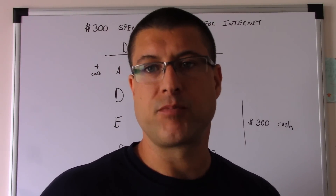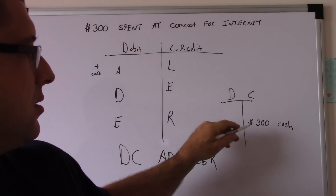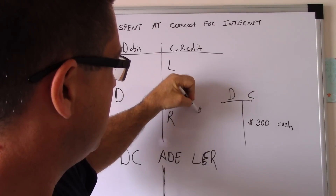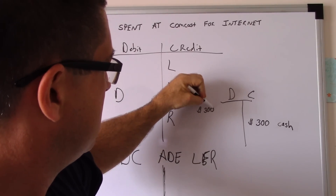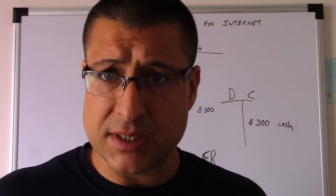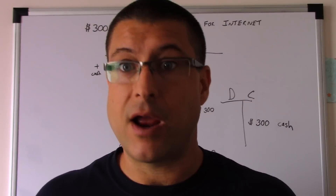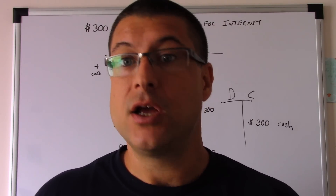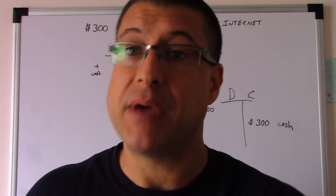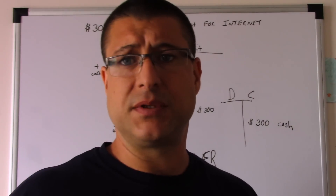So what's our debit? $300 cash is our credit, so we need our debit. We spent $300 at Comcast for internet. That's out of your business. Why did you spend the money? I needed the internet to produce revenue or make money for my business, so it's an expense. We're just going to say Comcast — that's in a chart of accounts, but that's later on.